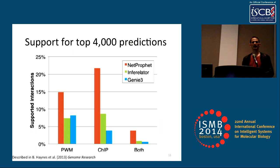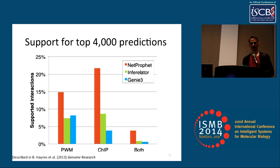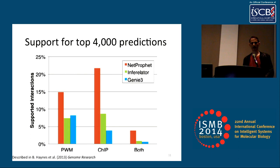We also compared NETPROFIT to two other algorithms for mapping regulatory networks from gene expression data: Inferlator and Gini3, which were winners of previous DREAM competitions for network inference from expression data. We applied all algorithms to the same dataset, took the top 4,000 predictions from each, and evaluated them according to support by PWM binding potential, support by CHIP, and support by both PWM and CHIP. By all measures, NETPROFIT performed significantly better than these other methods.